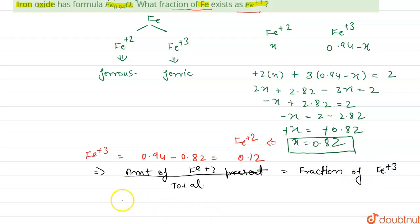So from here we can calculate it like 0.12 divided by 0.94, so it will be 0.127. This is the section of Fe³⁺.